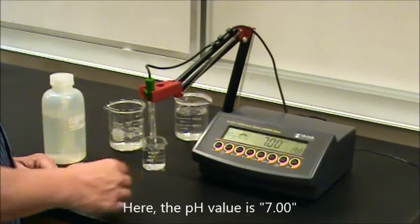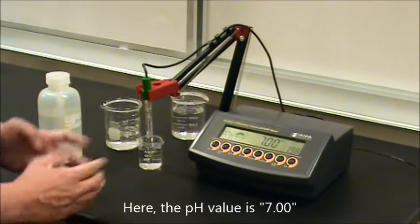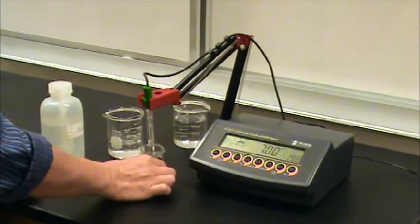In this case it's reading pH 7.00 and it shows that it's working properly because I'm taking the pH of a buffer of pH 7.